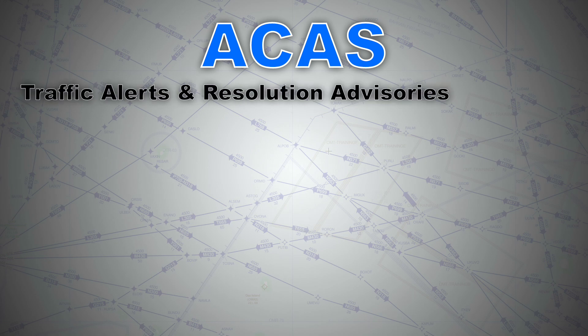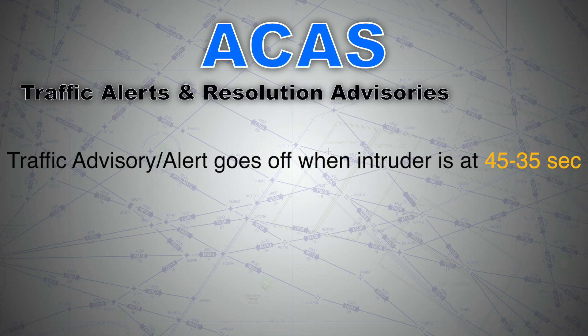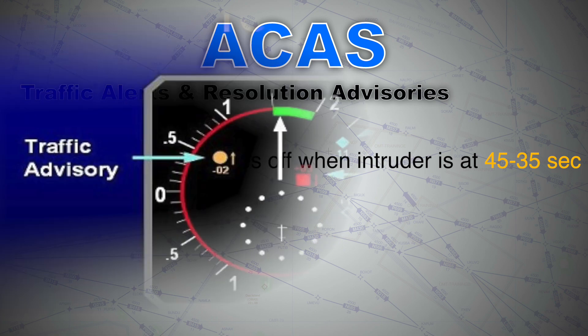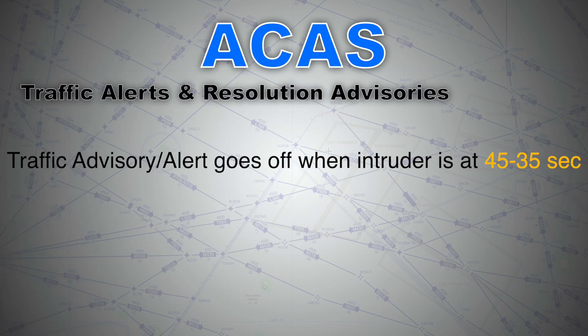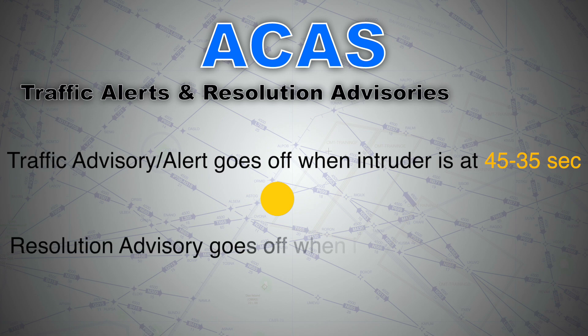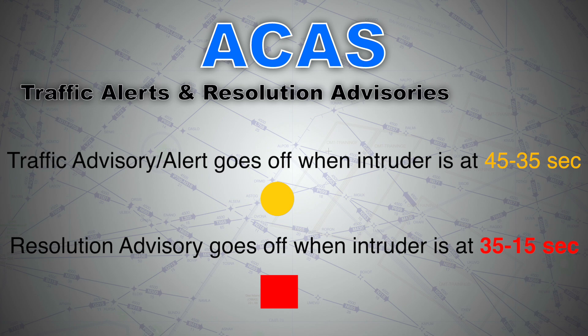TAs (traffic advisories) exist when an intruder penetrates the outer bubble caution area and is between 45 to 35 seconds from the collision area. TAs appear as a solid amber circle on the navigation display, accompanied by the synthetic voice 'traffic, traffic.' RAs (resolution advisories) exist when an intruder penetrates the inner bubble warning area and is between 35 to 15 seconds from the collision area. RAs appear as a solid red rectangle on the navigation display, accompanied by various synthetic voice warnings.